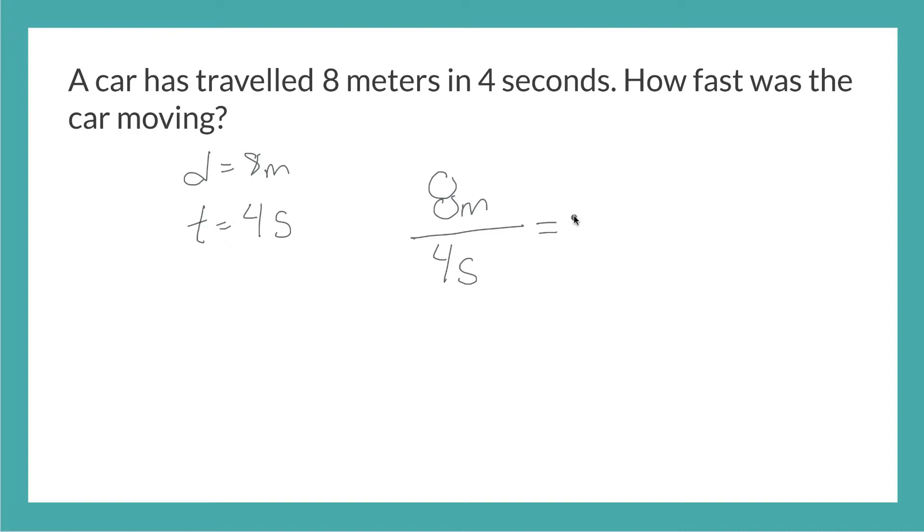So 8 divided by 4, you can either put it in a calculator, or if you know that one in your head, 8 divided by 4 is 2. And then my units here are still as a fraction, meter over second. But we've already learned in our last video, the units in physics, that this right here is actually a really important term. So meter over second are the units that are used for velocity.